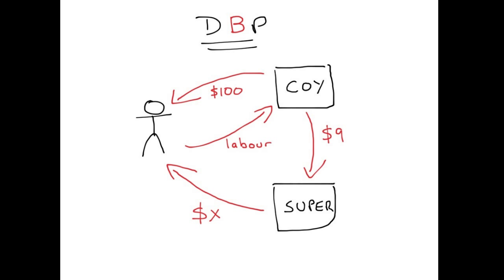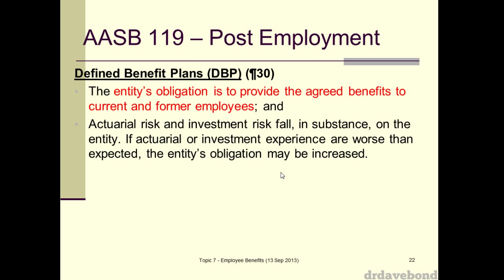What is different, though, is this next bit, because the amount that I'm going to get is defined. If you're looking on the defined benefit slide, the entity's obligation is to provide the agreed benefits to current and former employees. That number is actually a defined amount based on a convoluted formula — the main component being how much my salary is. It doesn't matter if the bottom falls out of the market. During the GFC, as share markets moved, my superannuation balance just kept going up, because it's not linked to the market at all — just linked to how much I'm paid.